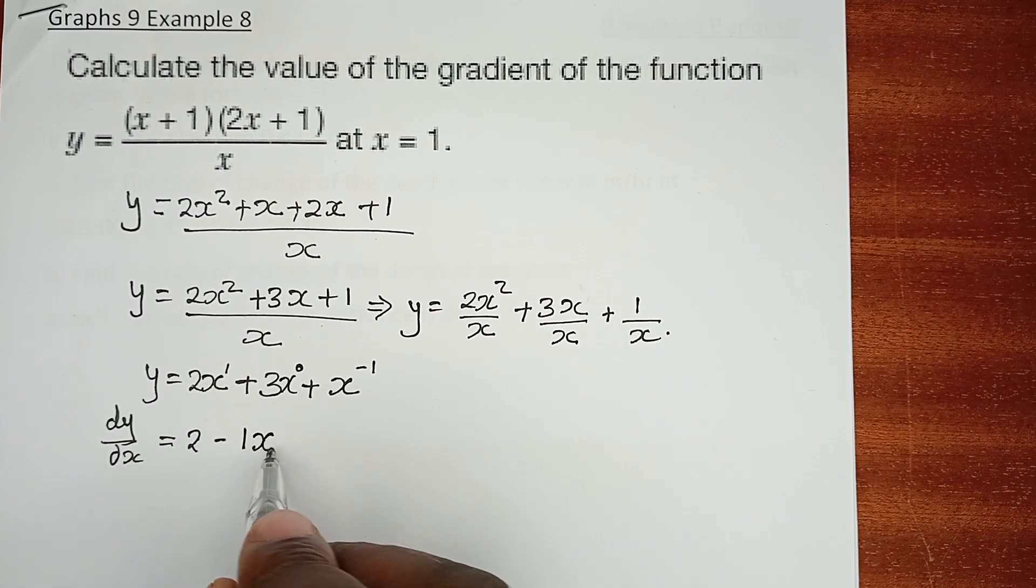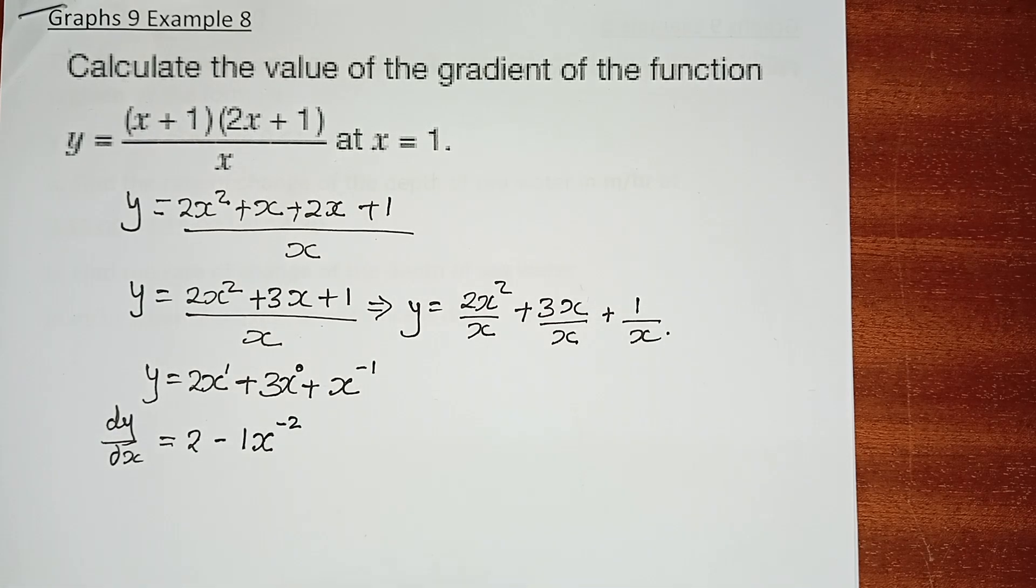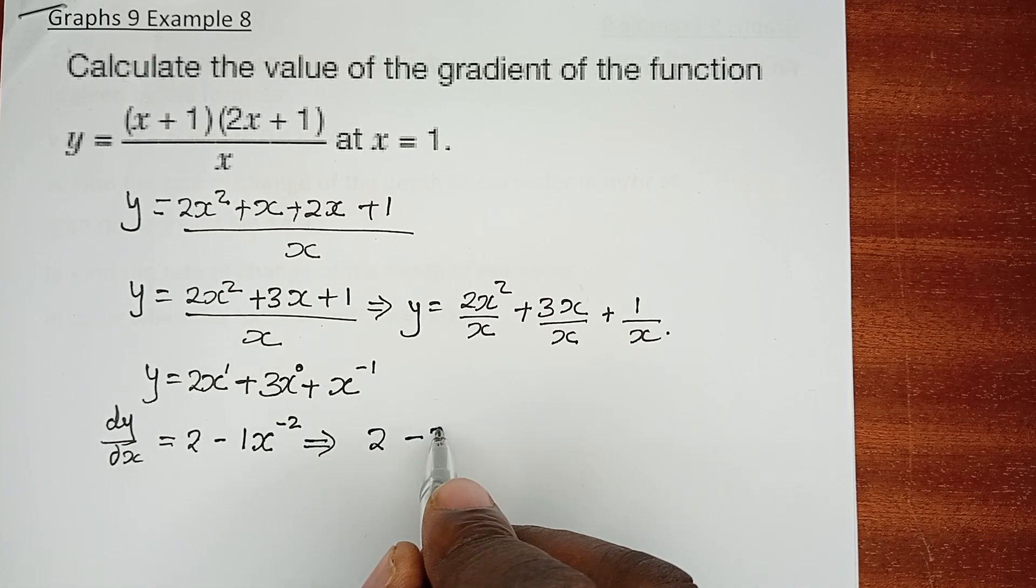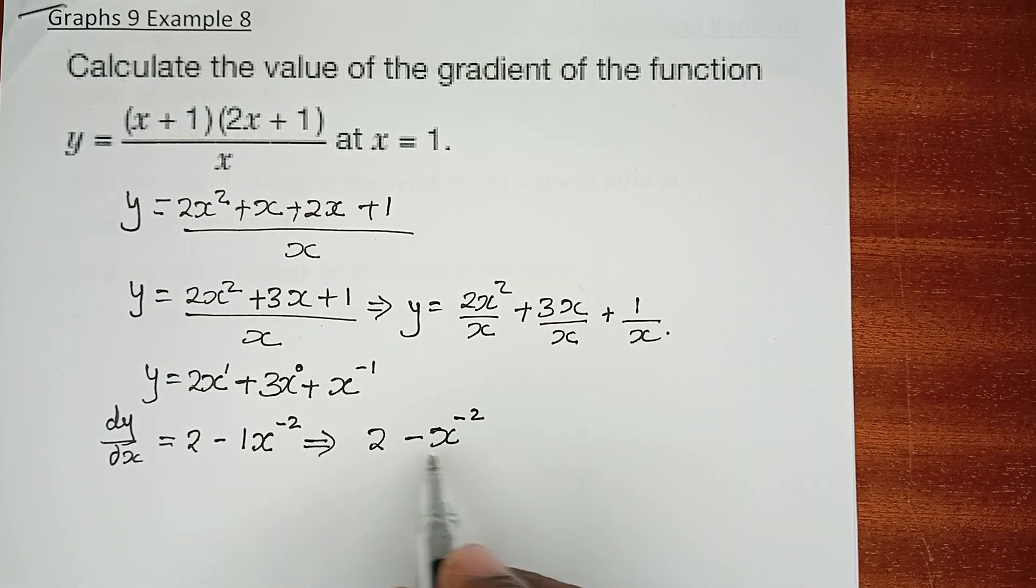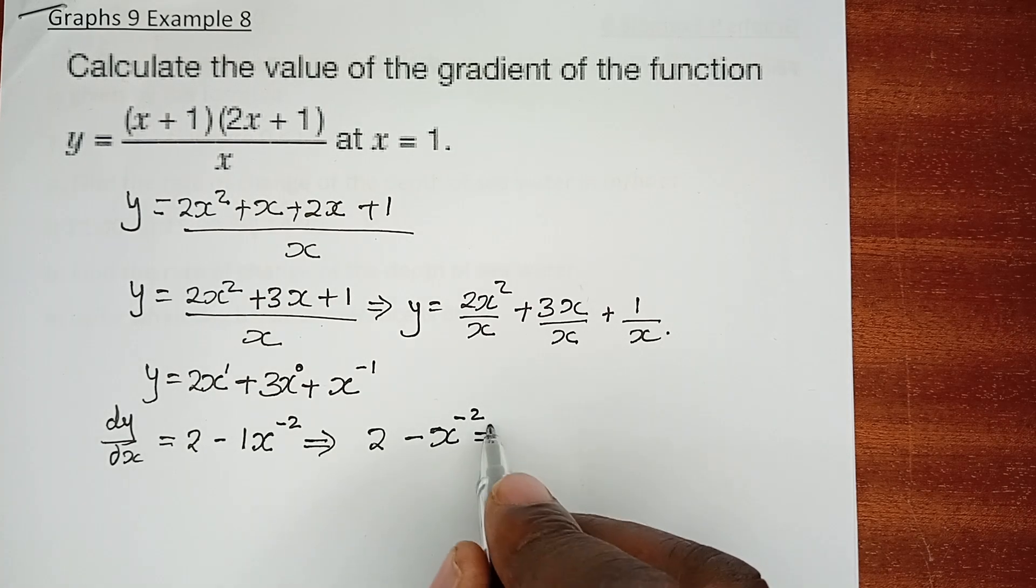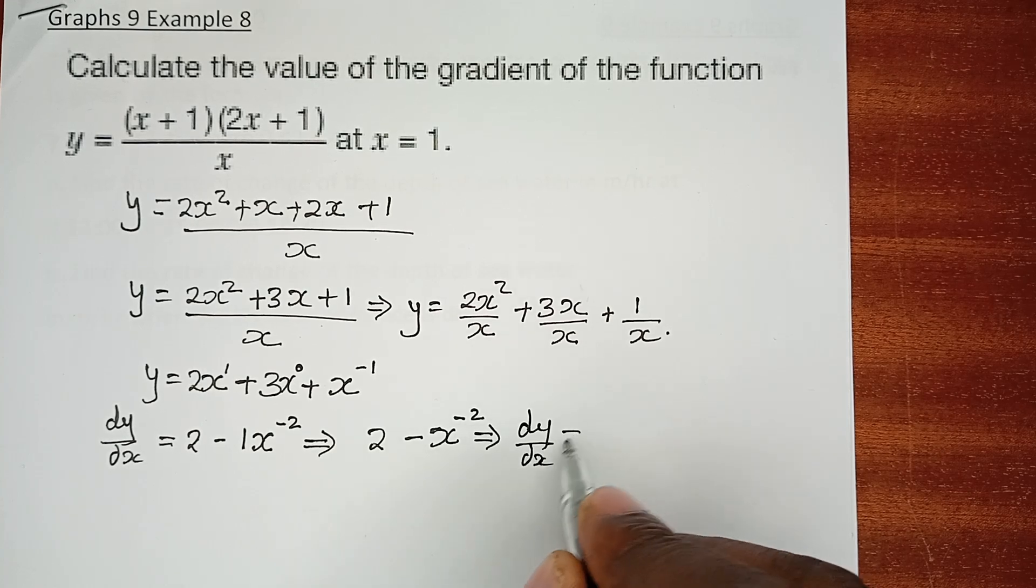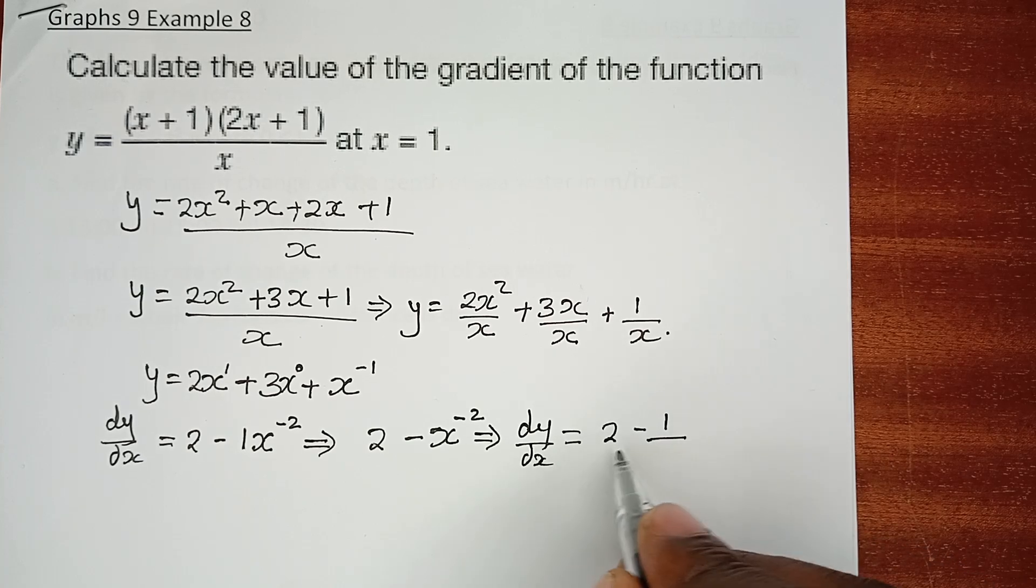This one is negative 1 as an index times 1, which means minus 1 times x raised to power minus 1 minus 1 is minus 2. We can write it now properly as 2 minus x raised to power minus 2. When this one now goes to the denominator, you're going to have dy/dx as 2 minus 1 over x squared. The power now becomes positive.